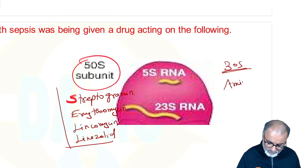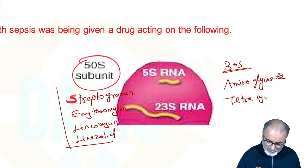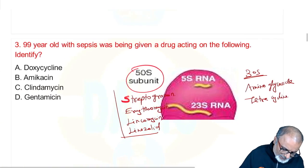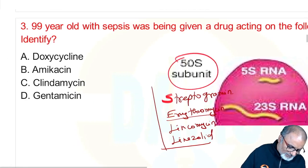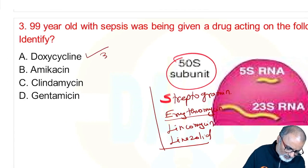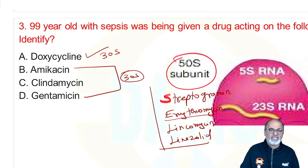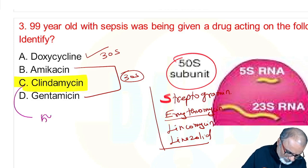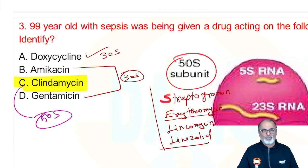For the 30s subunit, the mnemonic is 'buy AT 30, CELL at 50' — aminoglycosides and tetracyclines, including doxycycline, act on 30s. Doxycycline acts on 30s, gentamicin acts on 30s as aminoglycoside. The macrolide clindamycin acts on the 50s ribosome. That's important.